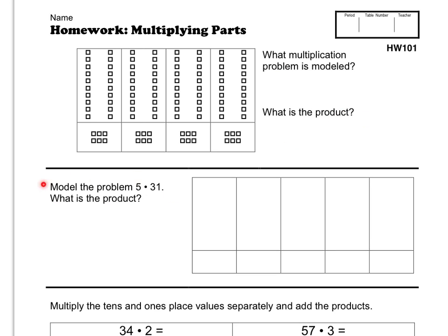Here we're doing the reverse. Model the problem, 5 times 31, what is the product? So you're going to put the big part of 31 and then the small part of 31 down here and you're going to make 5 groups of it so that you can figure out what the product is. You're going to have to write your answer there.